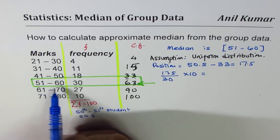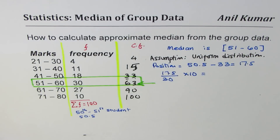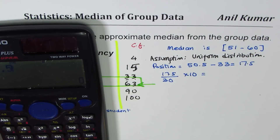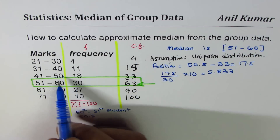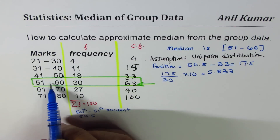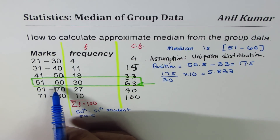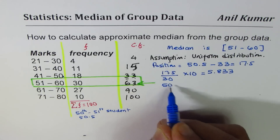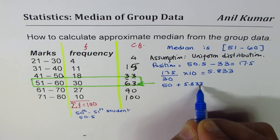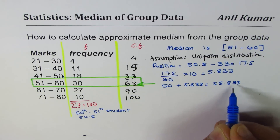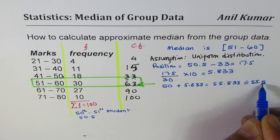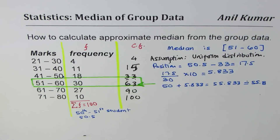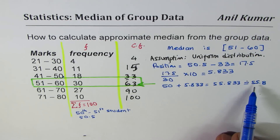We want to know how far the median is from 50. So we calculate: 17.5 divided by 30, times 10, equals 5.833. So it is 5.833 units away from 50, almost at the center of the interval but slightly to the right. Adding 5.833 to 50 gives us 55.833 — so the approximate median is 55.8.